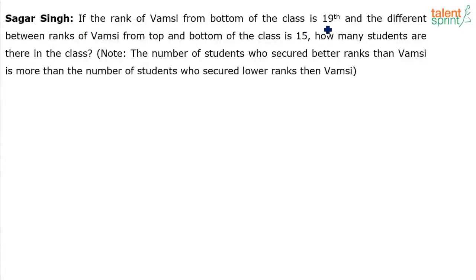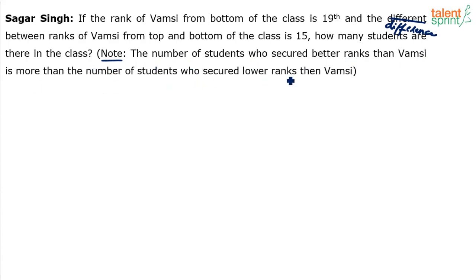If the rank of Vamshi from the bottom of the class is 19th and the difference between ranks of Vamshi from top and bottom of the class is 15, how many students are there in the class? There is also a note: the number of students who secured better ranks than Vamshi is more than the number of students who secured lower ranks than Vamshi.